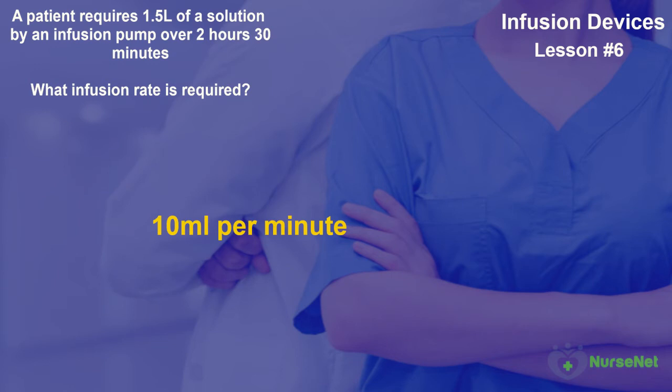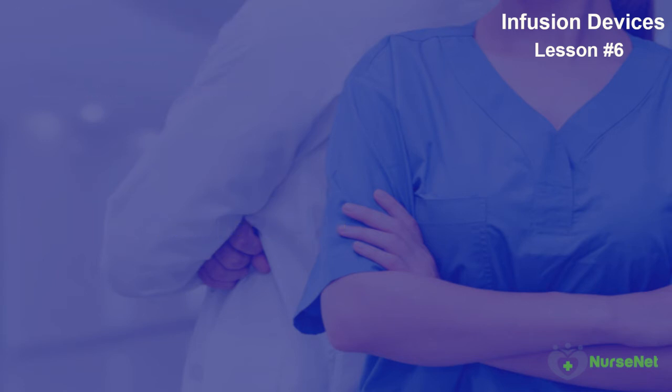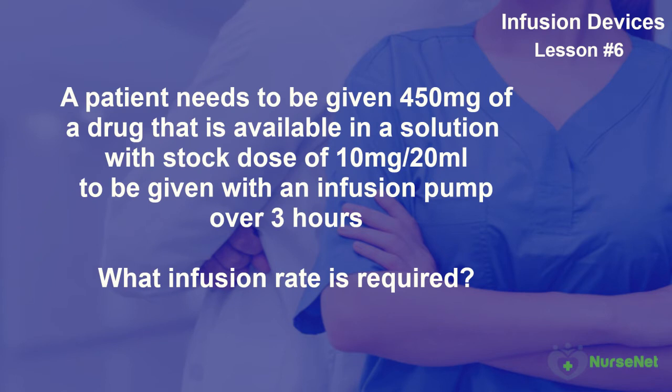Let's do one more, but this time we need to do a bit more work before we can do our final calculations. A patient needs to be given 450 milligrams of a drug that is available in a solution with a stock dose of 10 milligrams per 20 millilitres of solution. This is to be given with an infusion pump over 3 hours. What infusion rate is required? As we've discussed in previous lessons, comprehending the question is going to make our calculations and the correct answer that much easier.